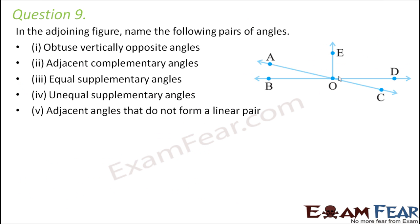Question number 9: in the adjoining figure, name the following pairs of angles. First: obtuse vertically opposite angles. Vertically opposite angles are angles formed by intersecting lines lying opposite to each other, and here they must be obtuse — greater than 90 degrees. One pair of vertically opposite angles appears less than 90 degrees, so they are not obtuse. The other pair — this angle and this angle — are large obtuse angles lying opposite each other. Therefore angle AOD and angle BOC form obtuse vertically opposite angles.